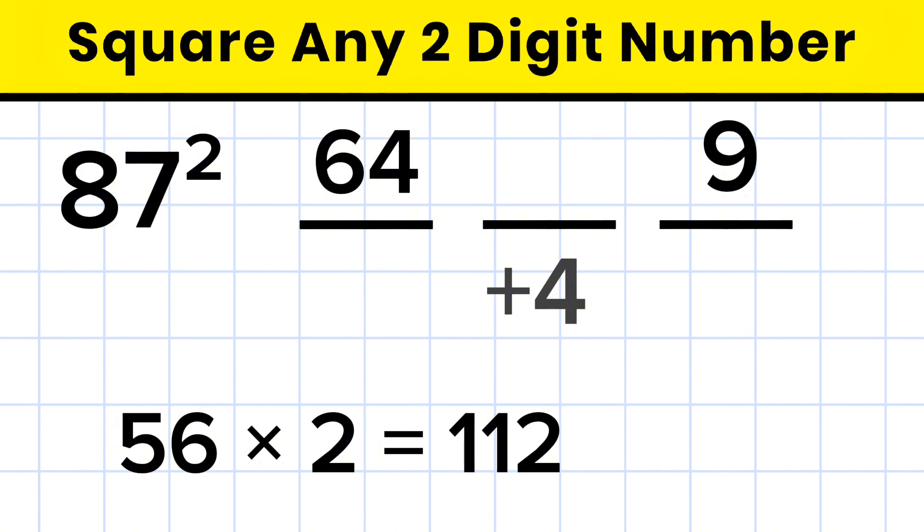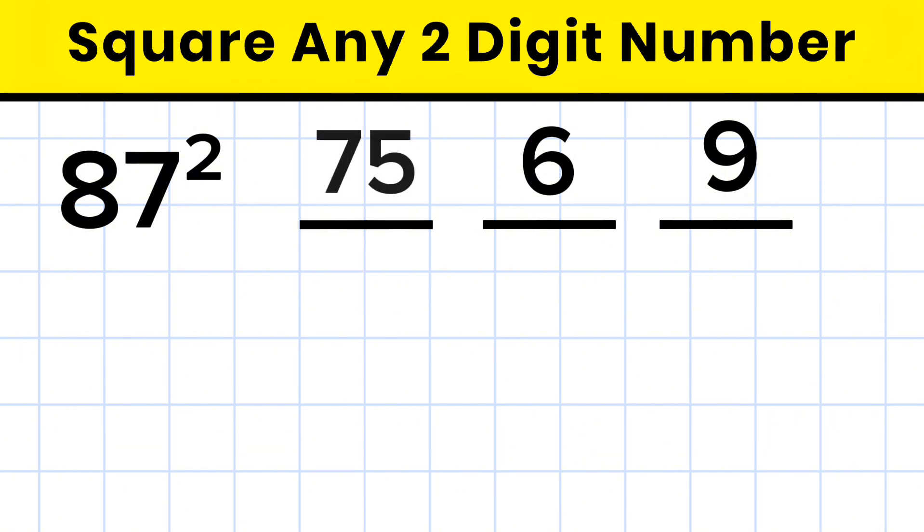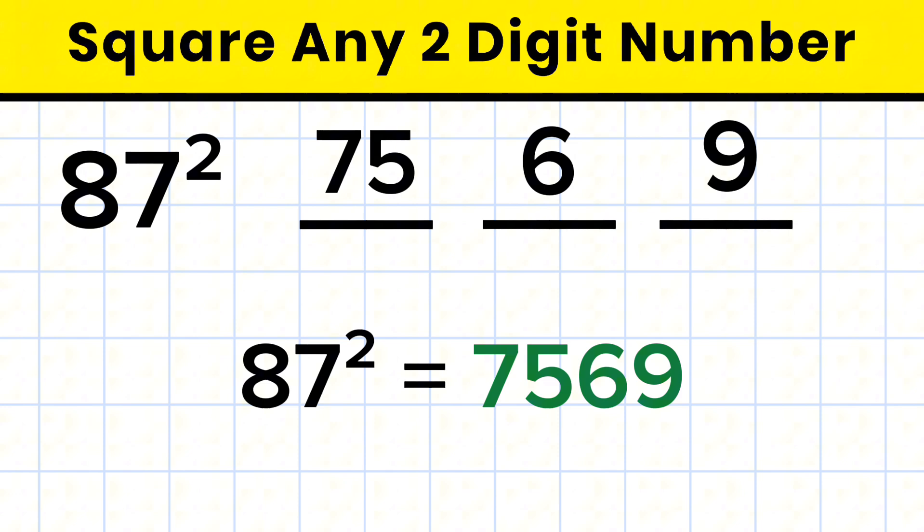Then 56 times 2 equals 112. Now we'll add the carry. That is 4. 112 plus 4 gives us 116. Write 6 in the middle. Carry 11. Now 64 plus 11 equals 75. So the final answer is 7569.